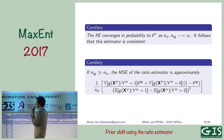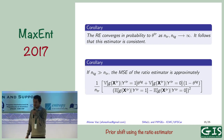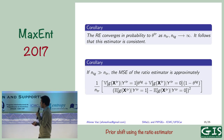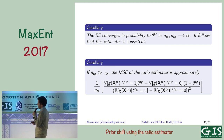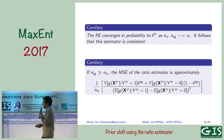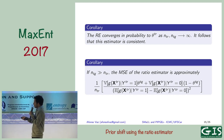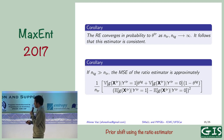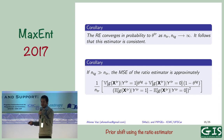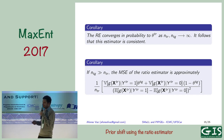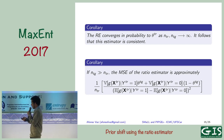Moreover, the ratio estimator is consistent for the proportion of interest. When the sample size in the target is much larger than the sample size in training, we can rewrite the mean squared error in a simpler expression.